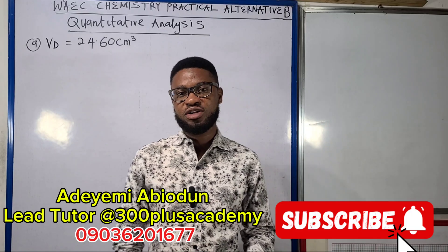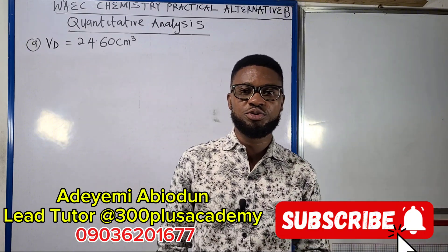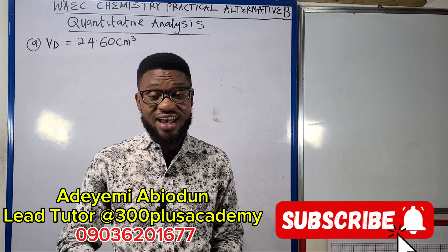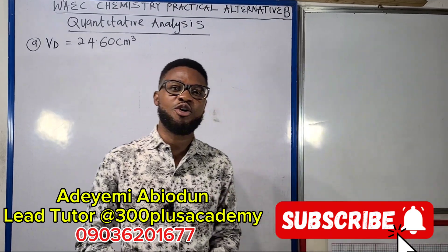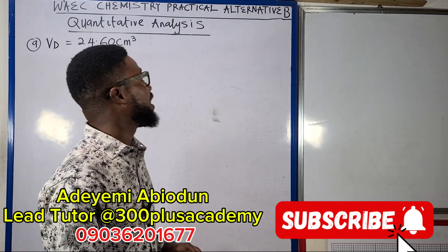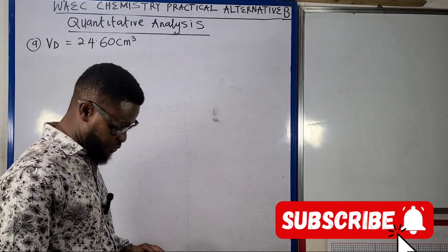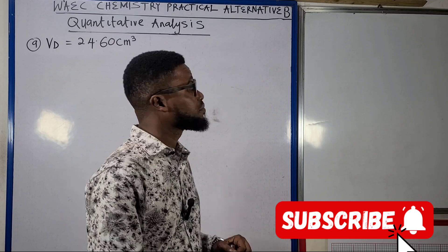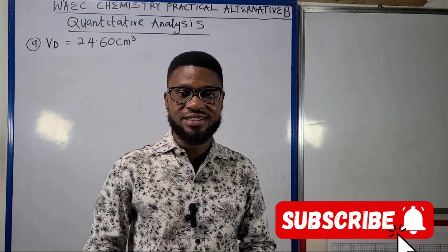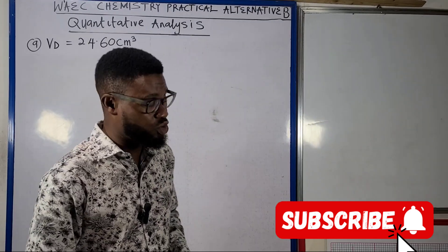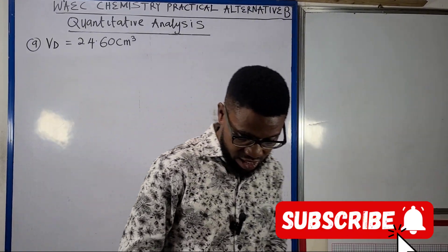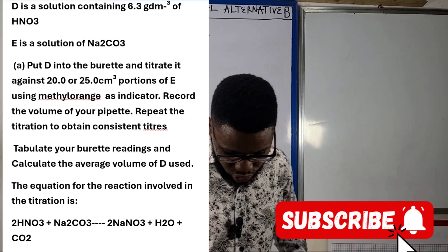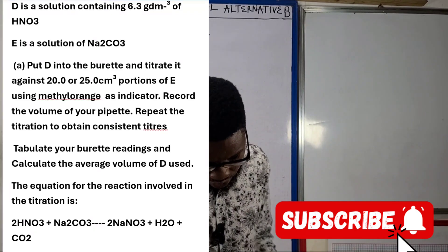Good day viewers, this is 300 Plus Academy where all we do is exams tutoring, ensuring that you ace your NEST at every exam. We are still on chemistry practical for WAEC, talking about Alternative B. This is the sister lecture video for this series and the final one, talking about quantitative analysis. In the question you can see on your screen, D is a solution containing 6.3 grams per dm³ of HNO3.